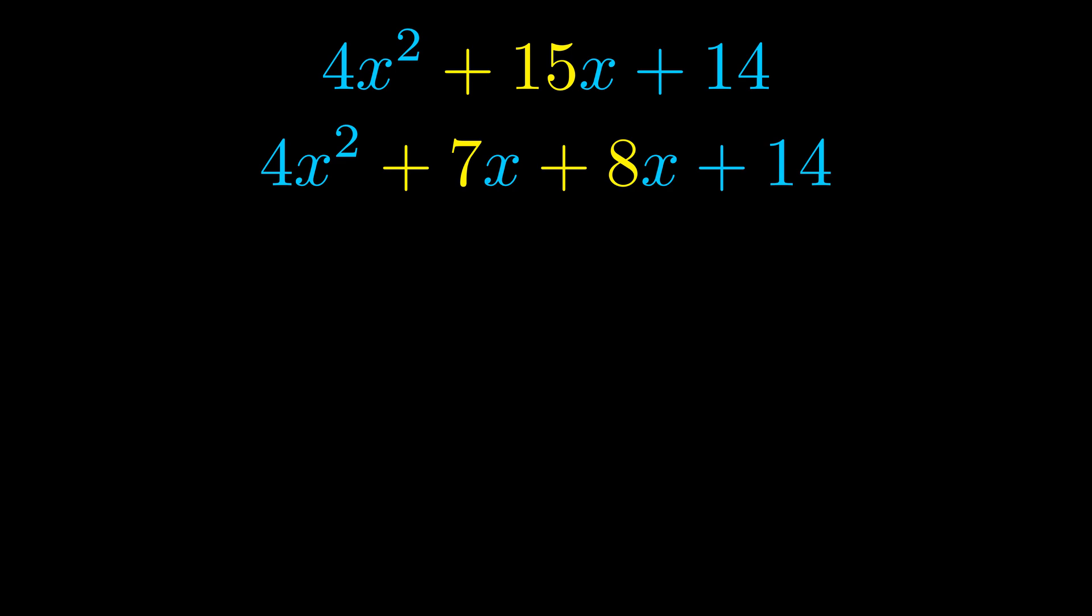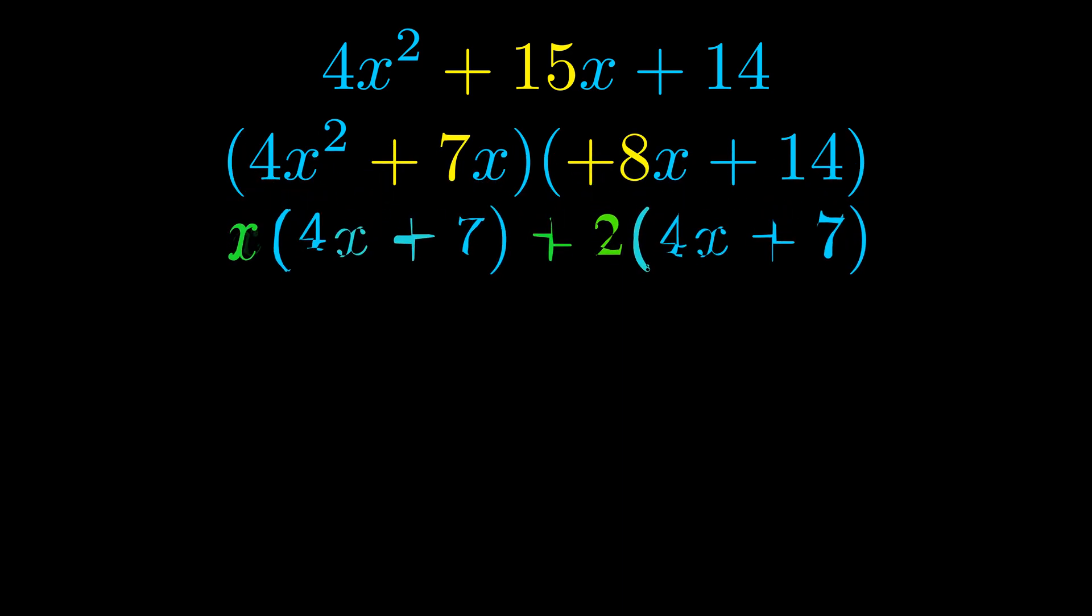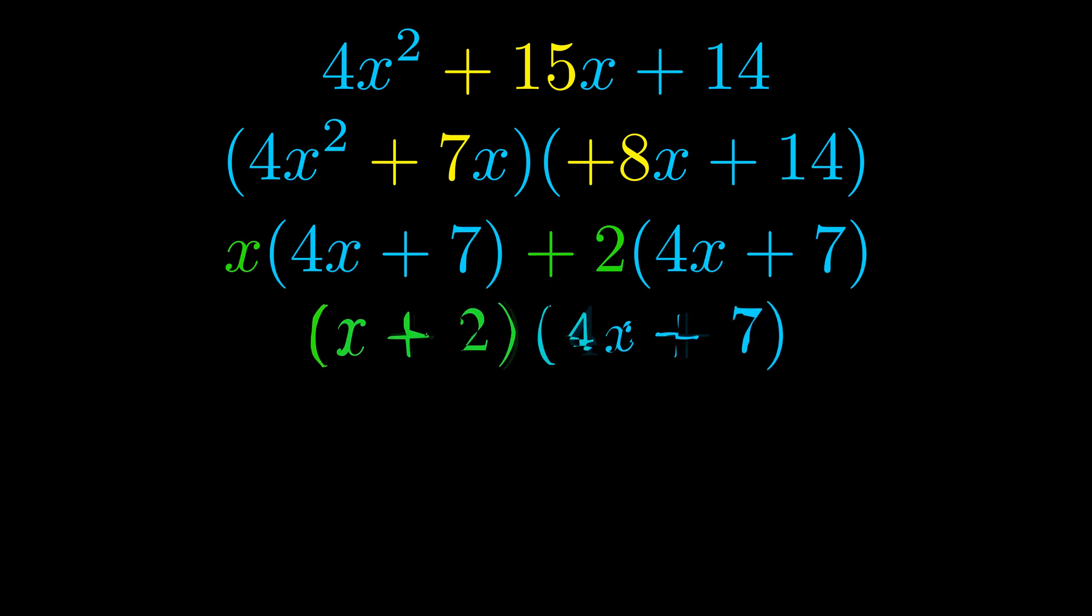Once we've done this, we go ahead and put parentheses around the first term and the last term. We do that so we can take the greatest common factor out of both terms. We can see the greatest common factor is now outside in green. Notice also how what remains inside of the parentheses is the same in both cases. The blue values are the same.